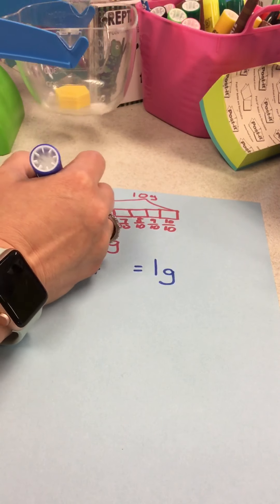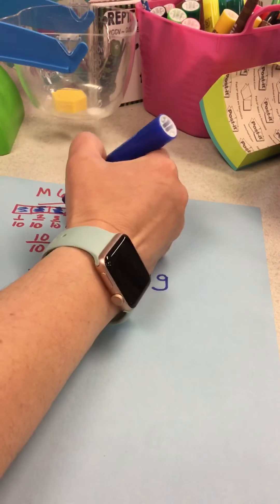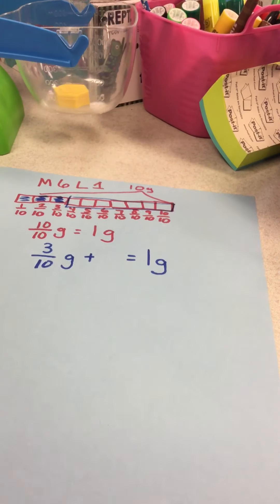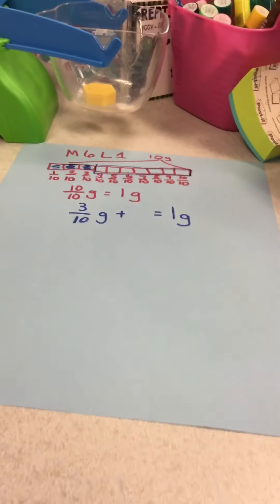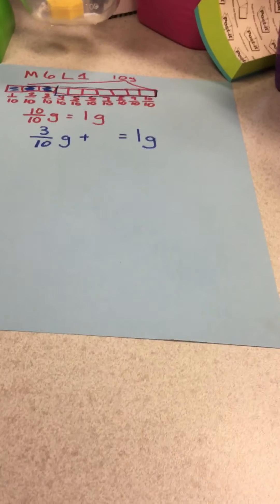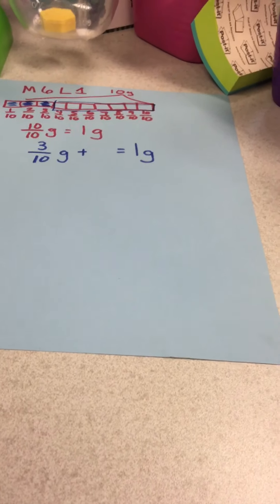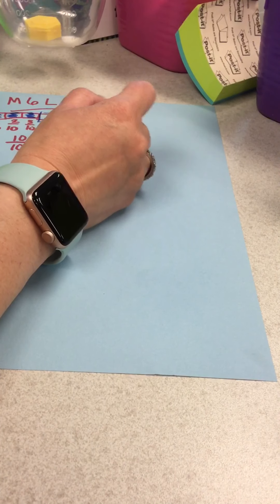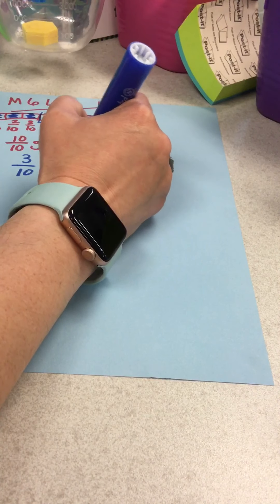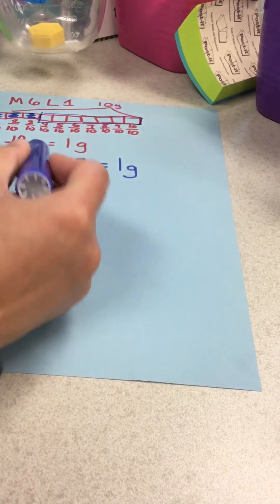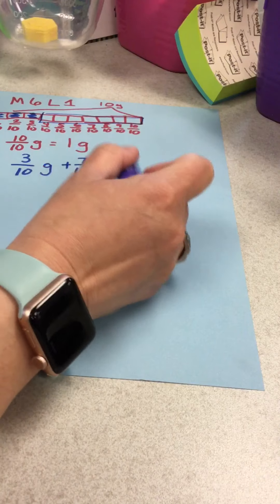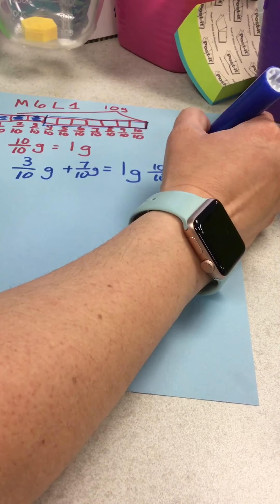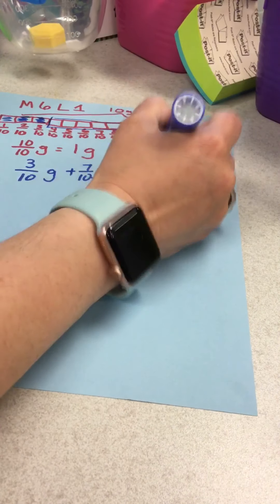So if I color this in, I've got one, two, three. What's left? I have all of these ones left. How many do I have left over there? Let's count it. One, two, three, four, five, six, seven. Seven tenths grams. So three tenths plus seven tenths is ten tenths or one gram.